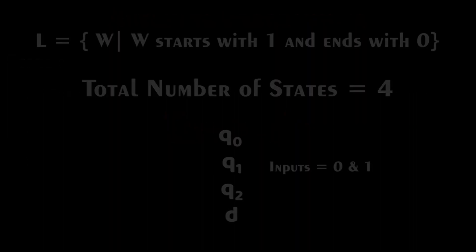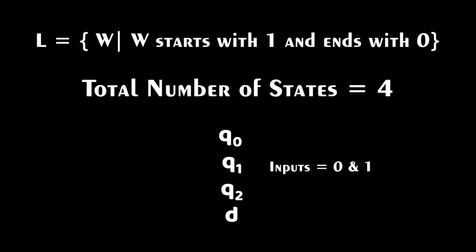Let us solve an example for better understanding. Given L is a language which contains W, where W starts with 1 and ends with 0. The inputs are 0 or 1, and the total number of states is equal to 4.